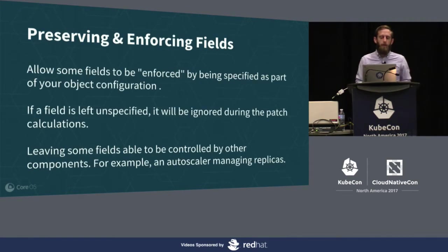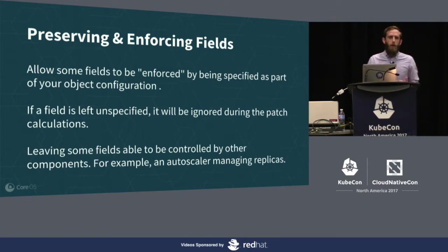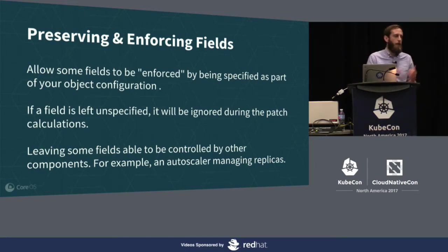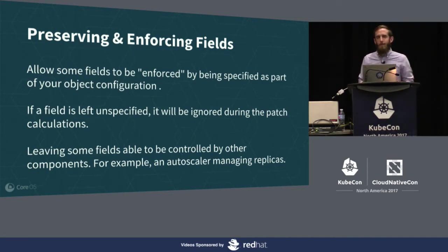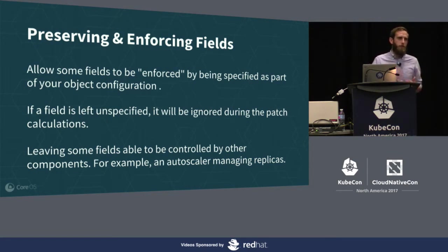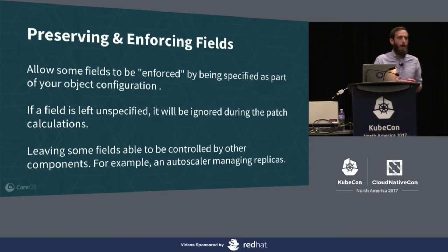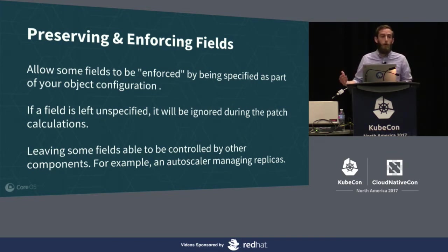So we can create objects, add and remove fields. Why else do we want to use apply? Another really powerful aspect is the ability to preserve and enforce different fields. When I say enforce, I mean the fields you're putting in your local object configuration are things you want to enforce when you run apply. But you can also omit certain fields, allowing those to be controlled by other aspects of the system. A really good example is autoscaling components - you might want to change labels and containers, but have an autoscaler manage replica counts, so when you run apply you don't touch replicas.